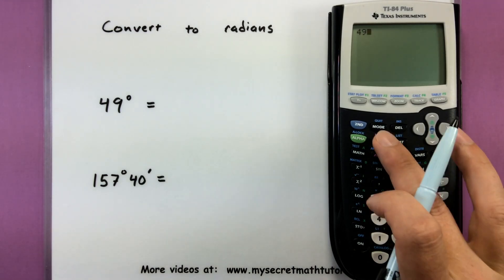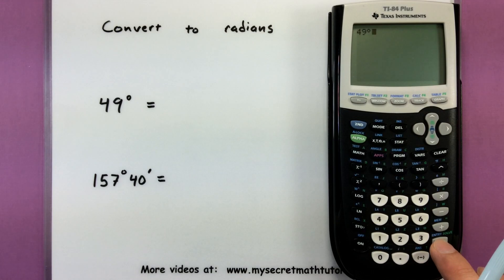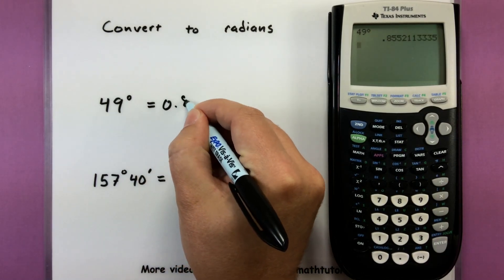Alright. So there's 49 degrees. Second angle. We're going to give it the little degree marker. Press enter. And the calculator will do the conversion part. So 0.855.